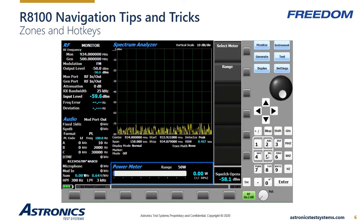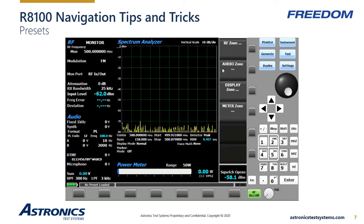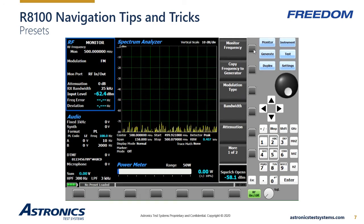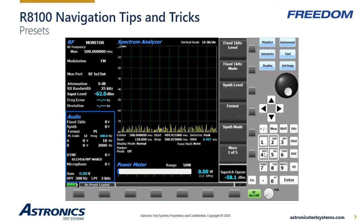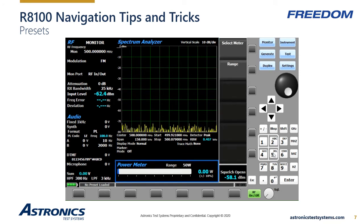Now let's look into presets. With each device you test, there are several parameters and variations of setup, and you can save time by using presets. In just the RF zone alone, you have frequency, modulation type, bandwidth, attenuation mode, and level. You can select a direct measurement using the protected RFIO port, or measure off the air on the antenna port, which may preclude using the preamplifier. Then there are multiple parameters in the audio zone, the display zone, and the meter zone that you need to set up.